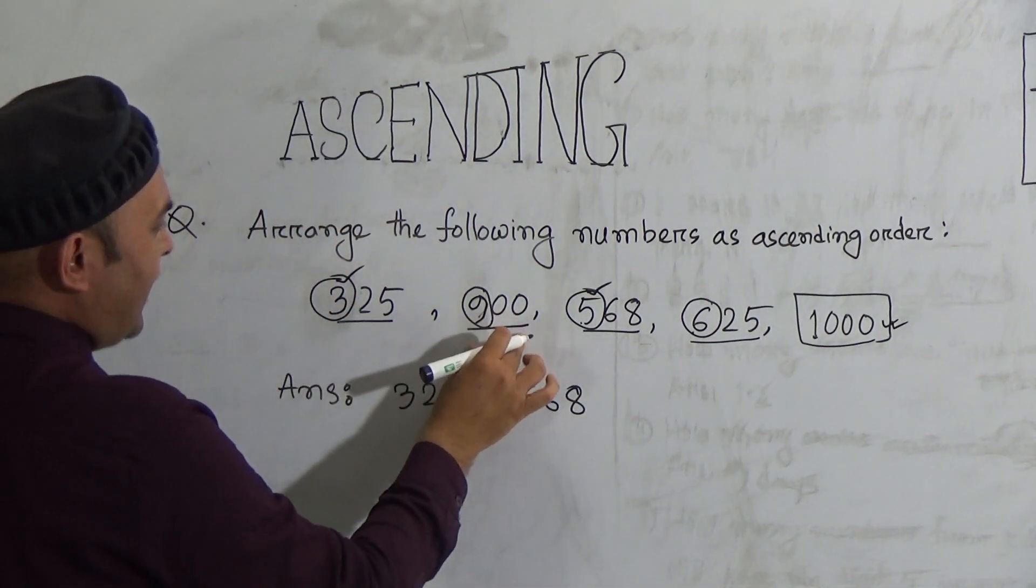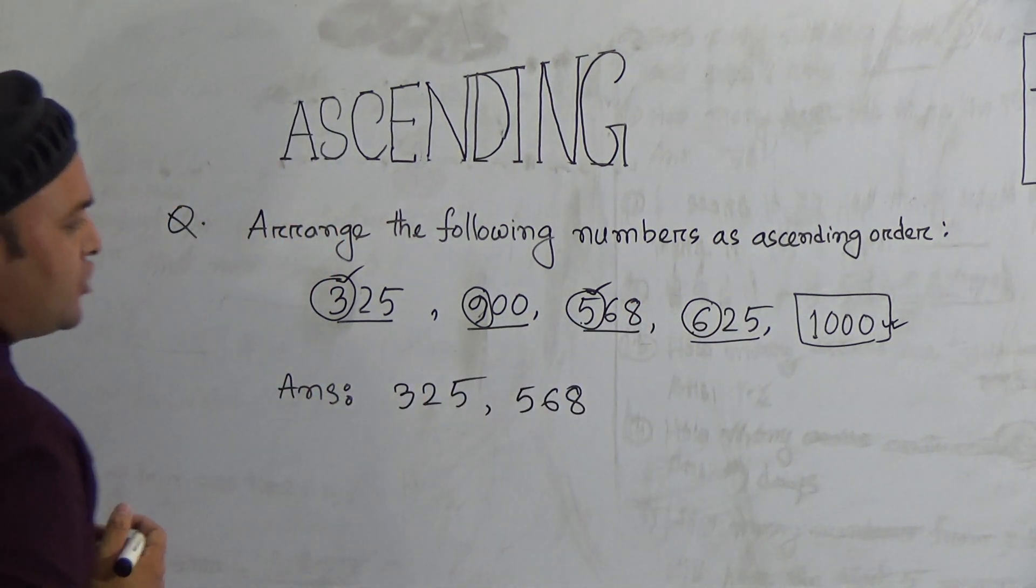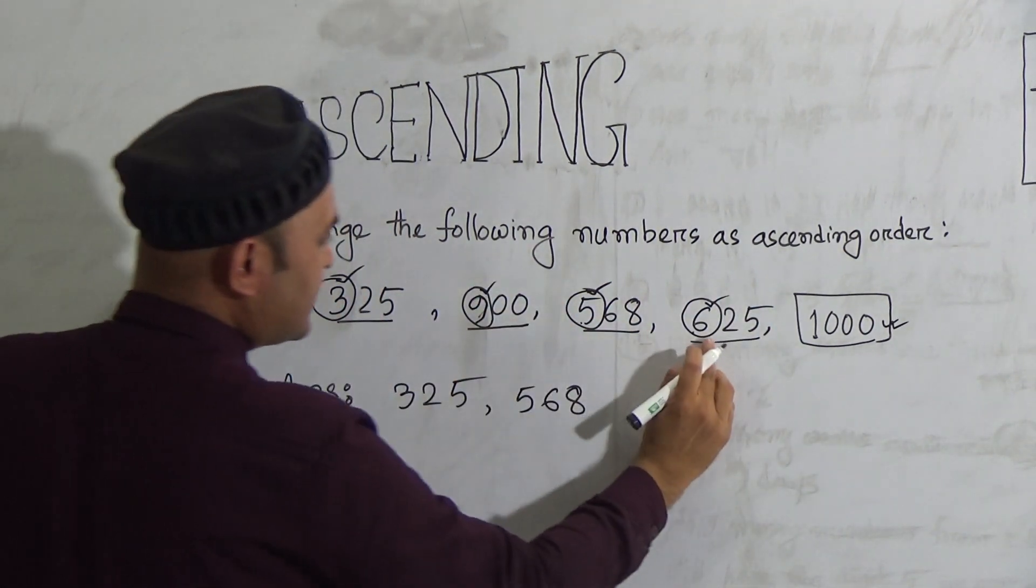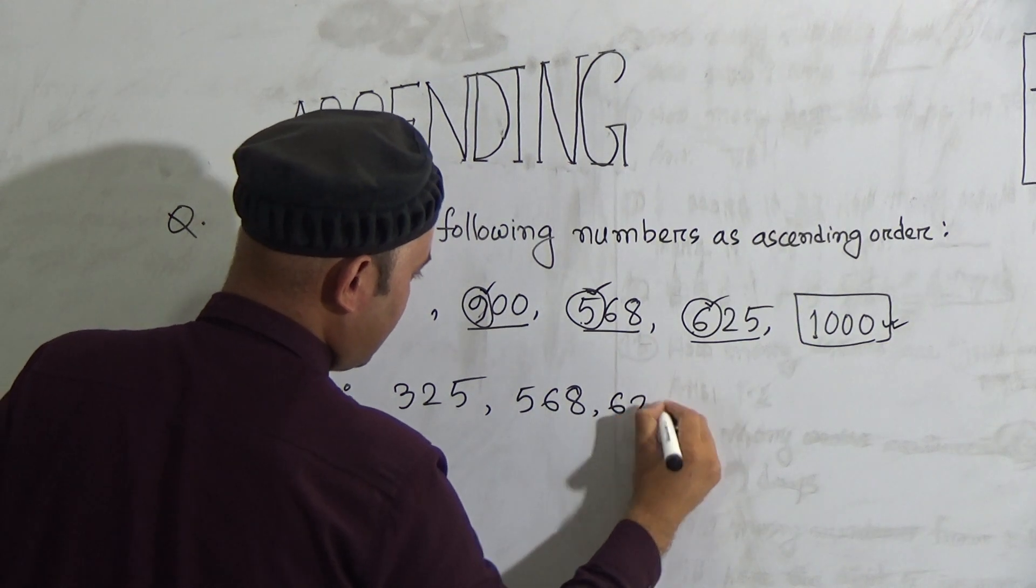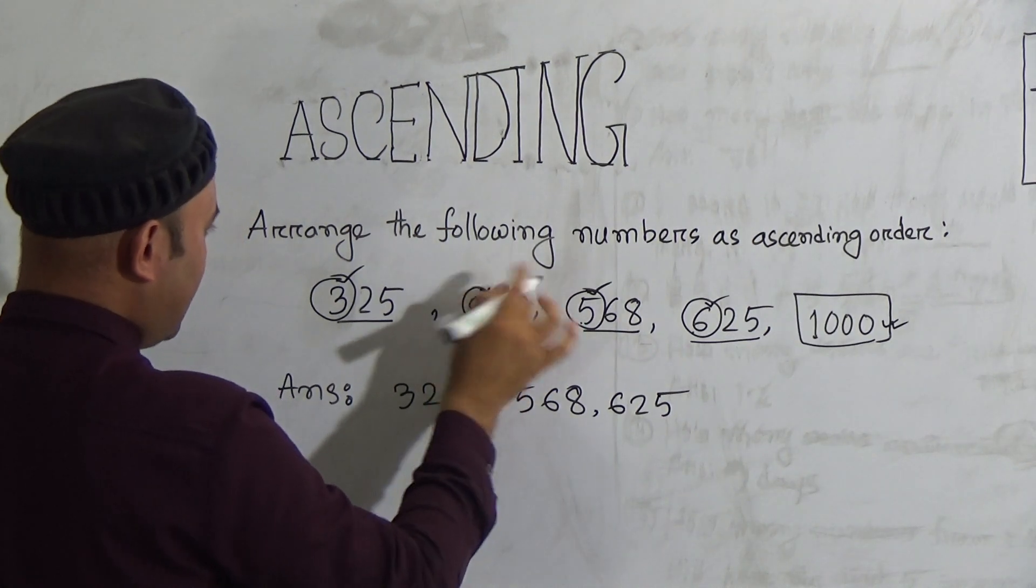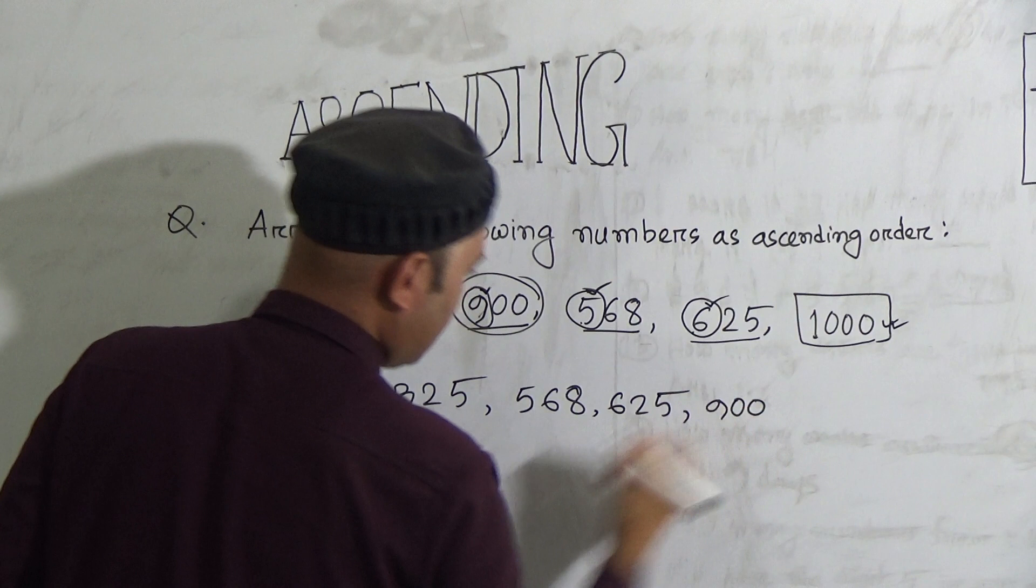Then 900 and 625. Which one is smallest between them? 6 and 9. Which one is smallest? 6 is smaller. So the next number will be 625.